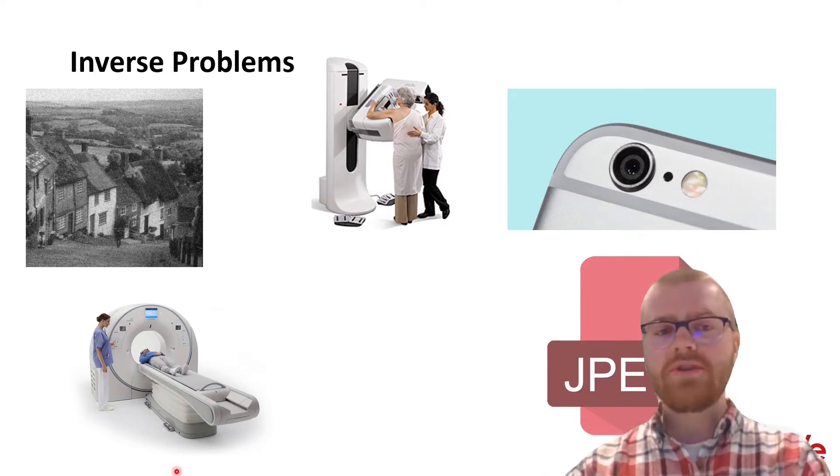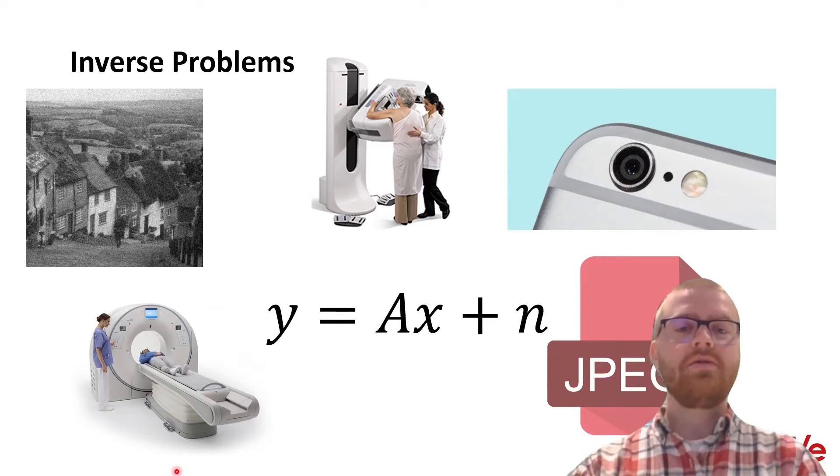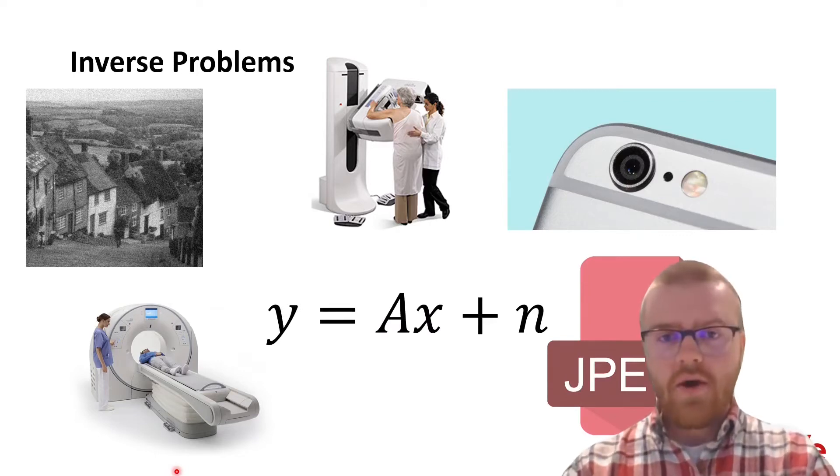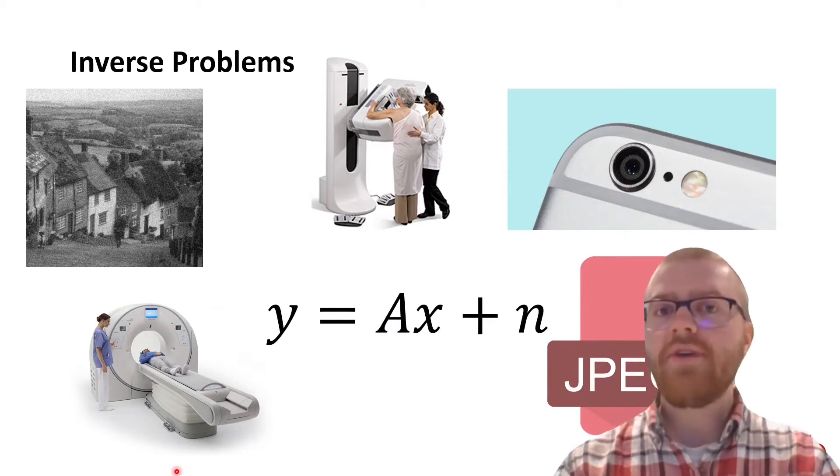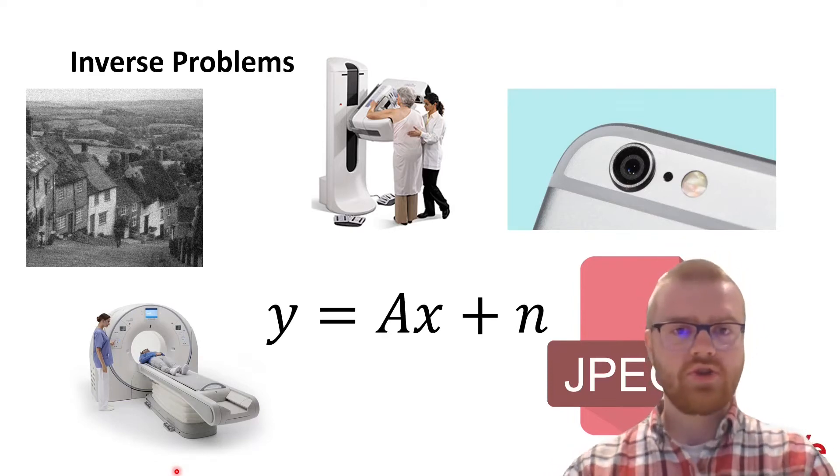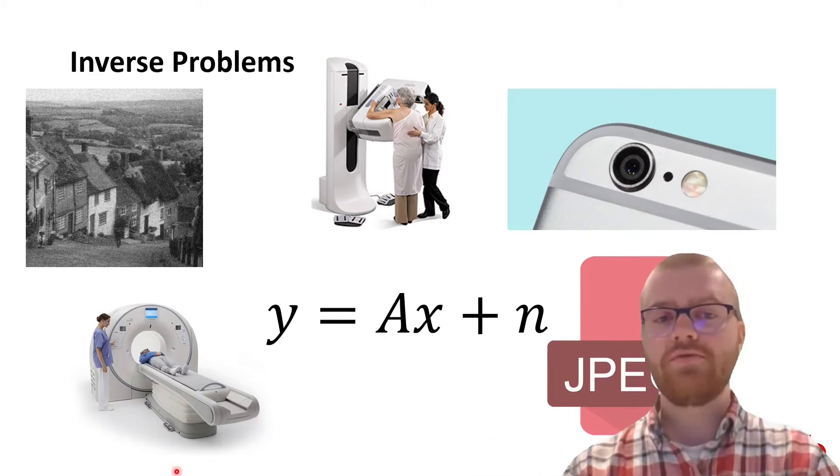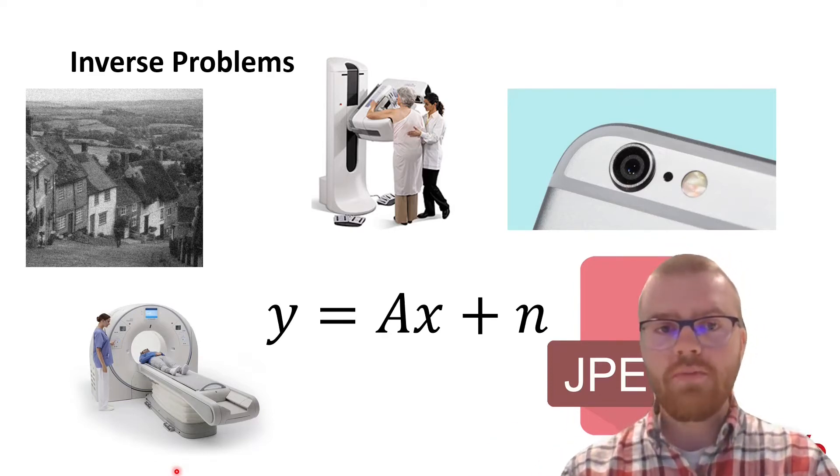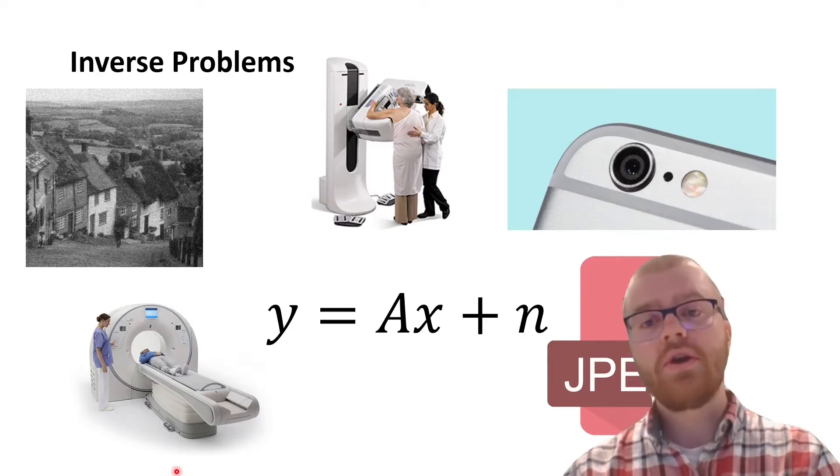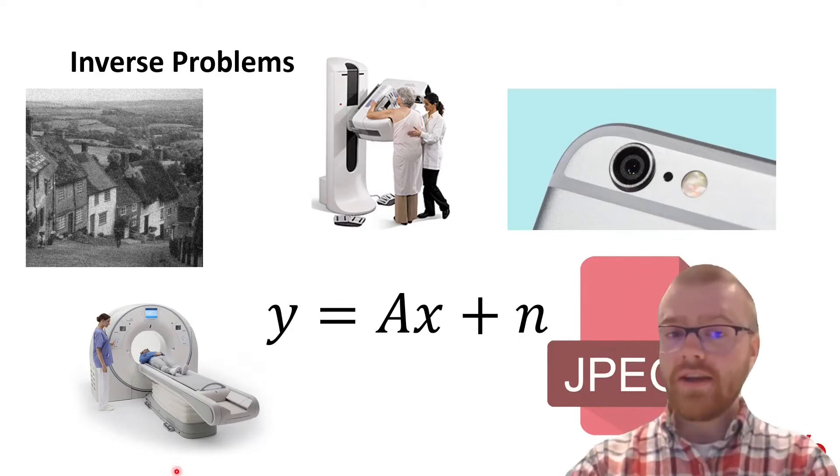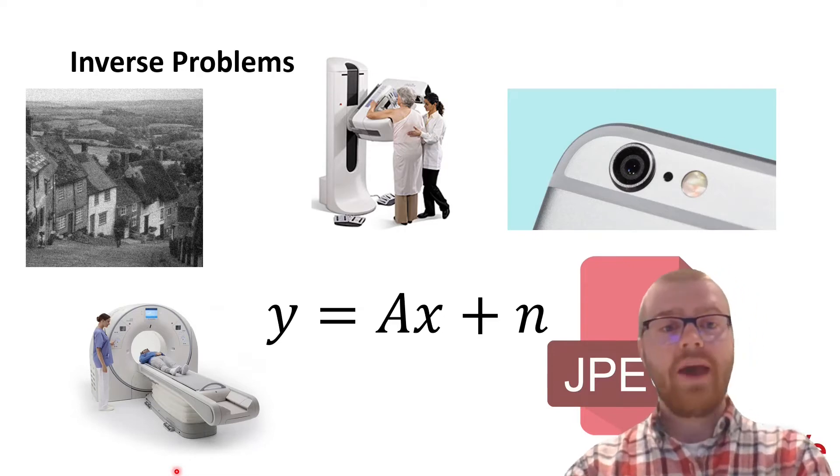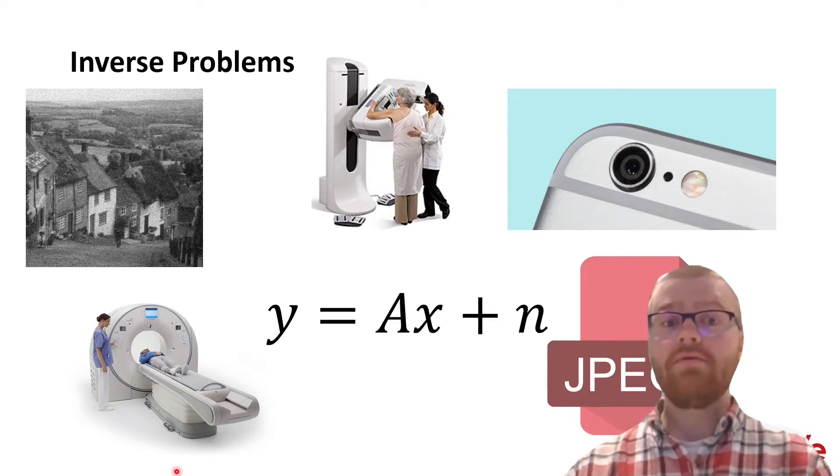Think about black and white image coloration or denoising or medical applications such as MRI or CT or JPEG decompression. And central to inverse problems is the equation Y equals AX plus M. Where Y is a measurement we have access to, X is some ground truth which we are trying to recover, but this problem is made difficult because either our matrix A is not an identity or there is some additive noise M or even both.